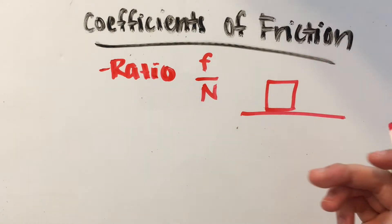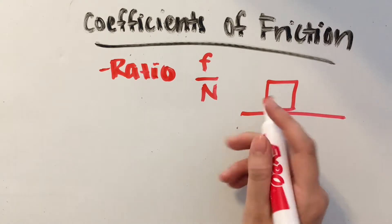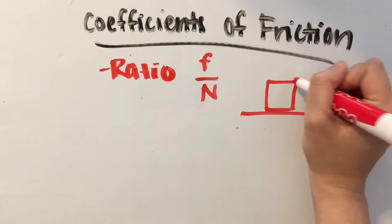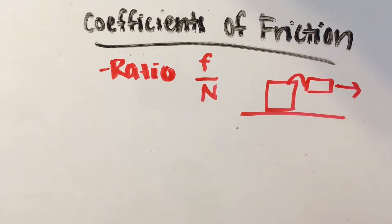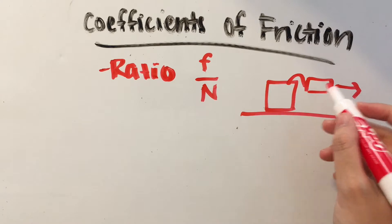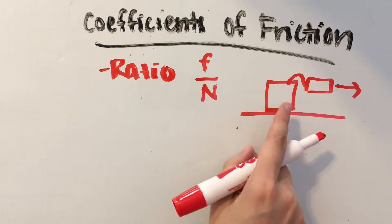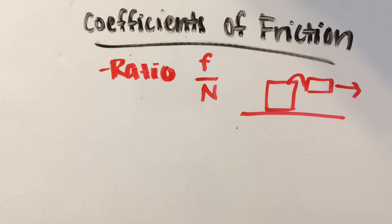Now the frictional force would be the minimum force that's required to get this box to actually start moving. So if we attach a spring scale onto this box and then we start pulling it in this direction, then the amount of force that's needed to actually get this box to start moving is going to be what's in our numerator here.